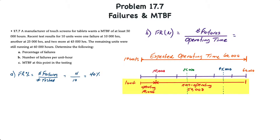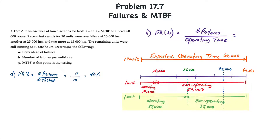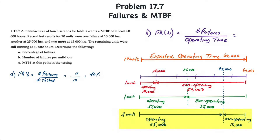We have 10 units that were put into testing for 60,000 hours. The first unit failed at 10,000 hours, meaning its operating time was 10,000 hours and its non-operating time was 50,000 hours. Another unit failed at 25,000 hours, so its non-operating time was 35,000 hours. Then two units failed after 45,000 hours of operating time, giving a non-operating time of 15,000 hours each.